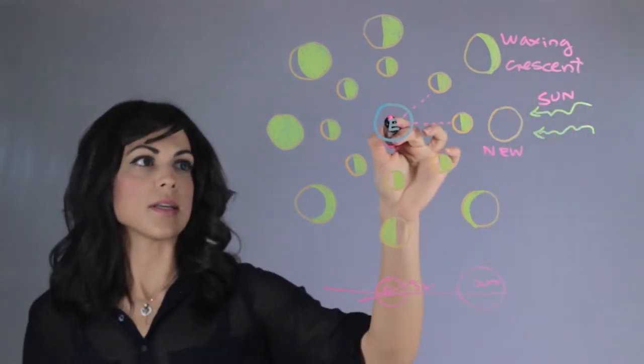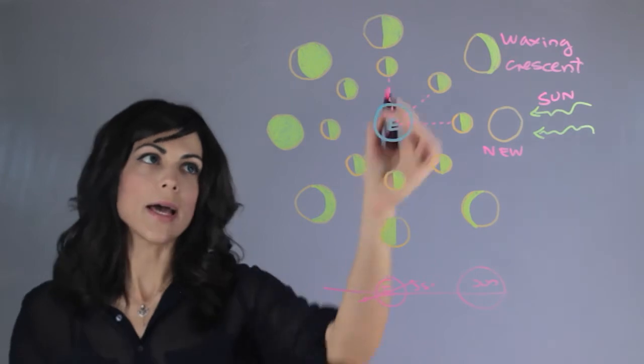Now what happens when it is at 90 degrees? Then we see a half and this is the first quarter.